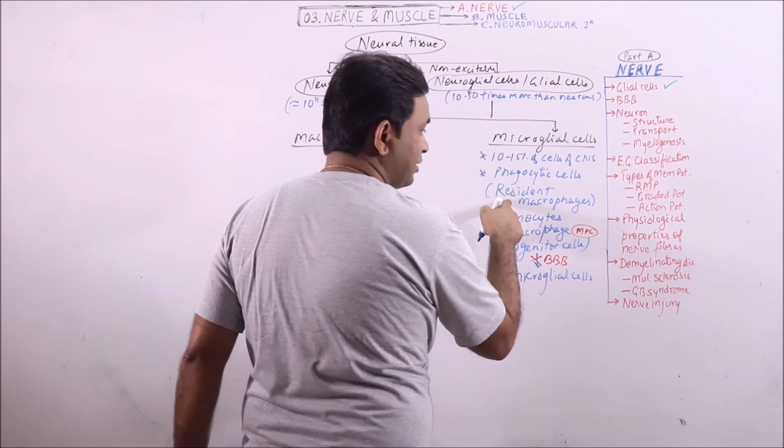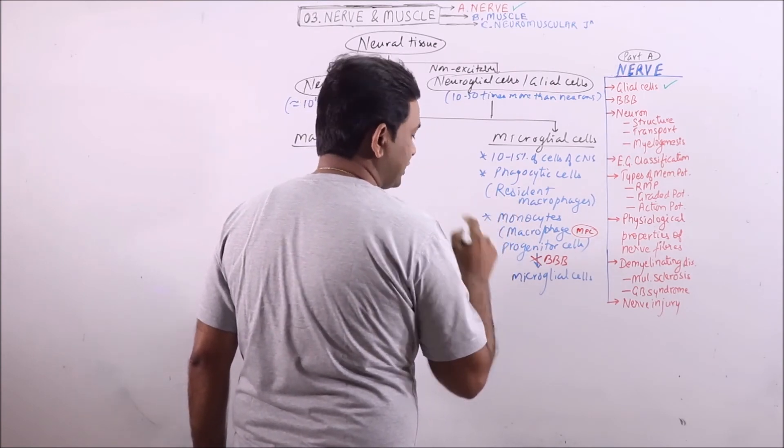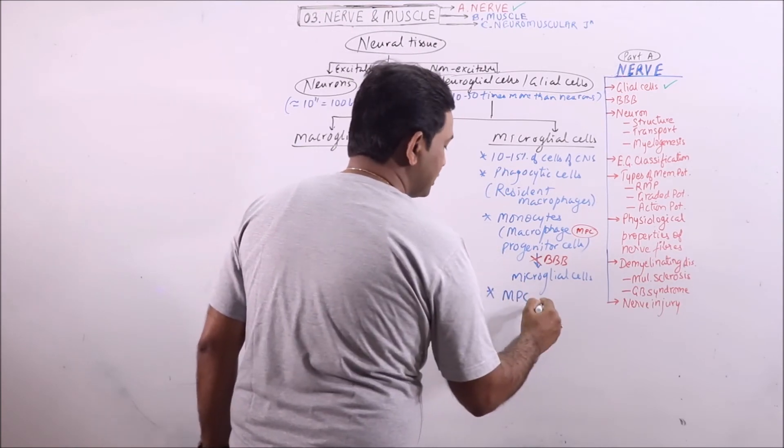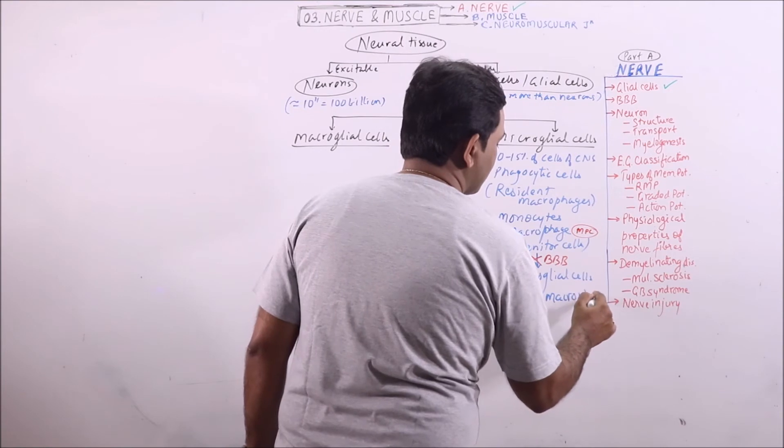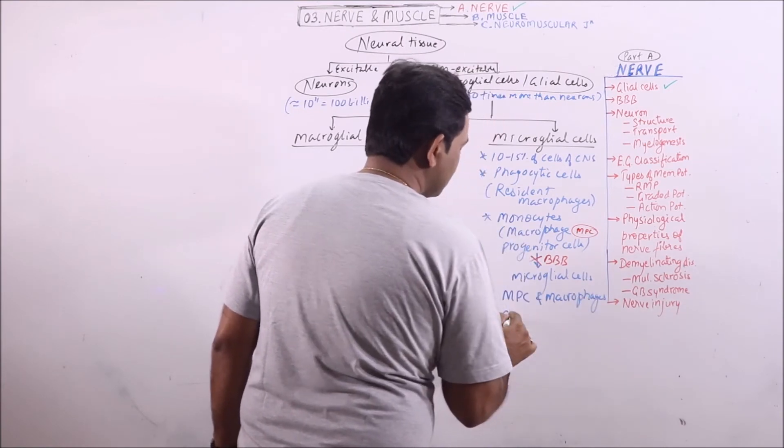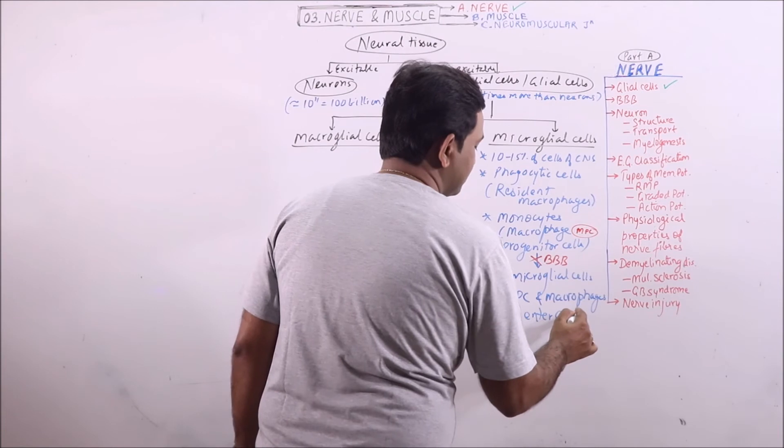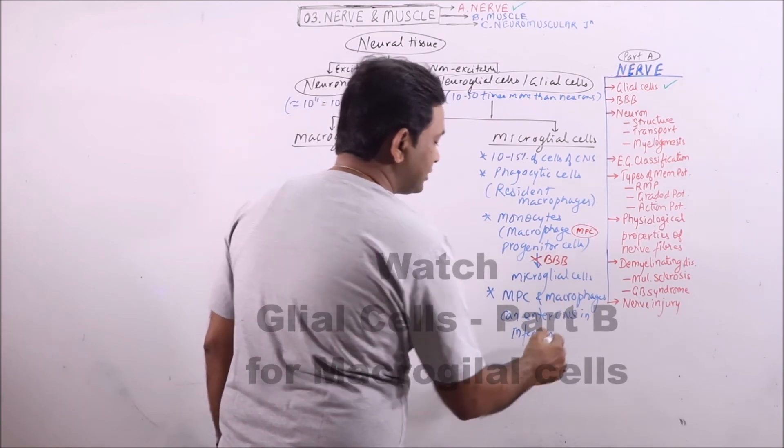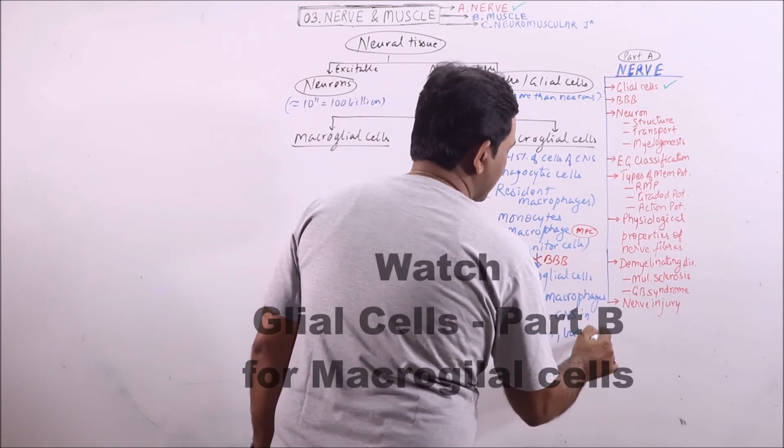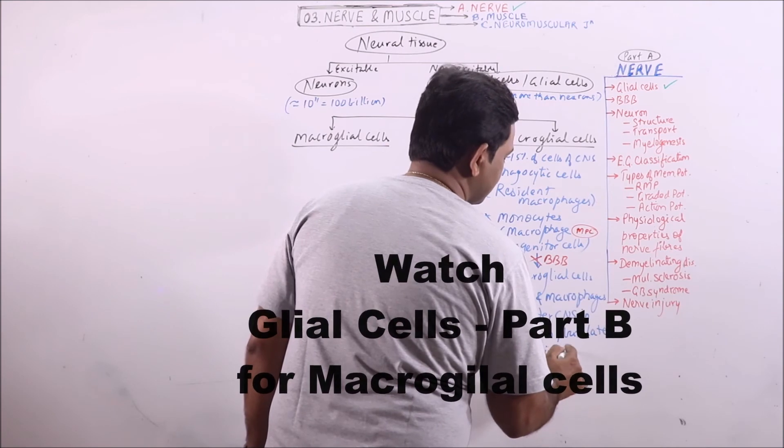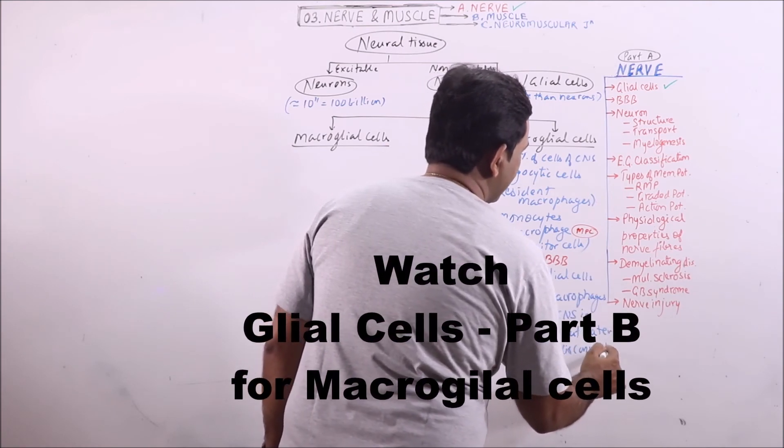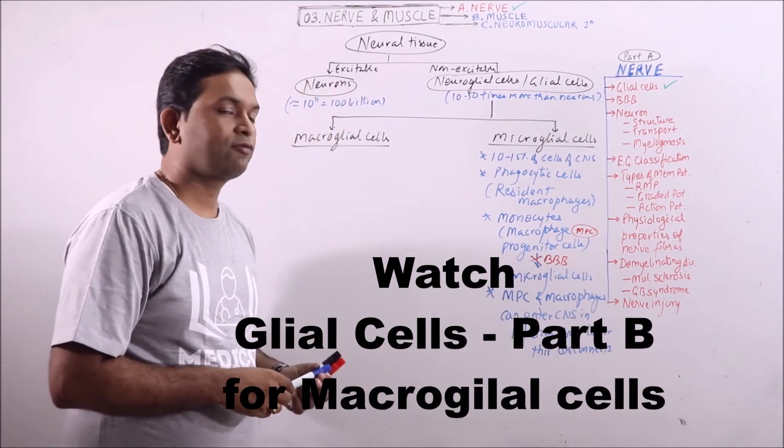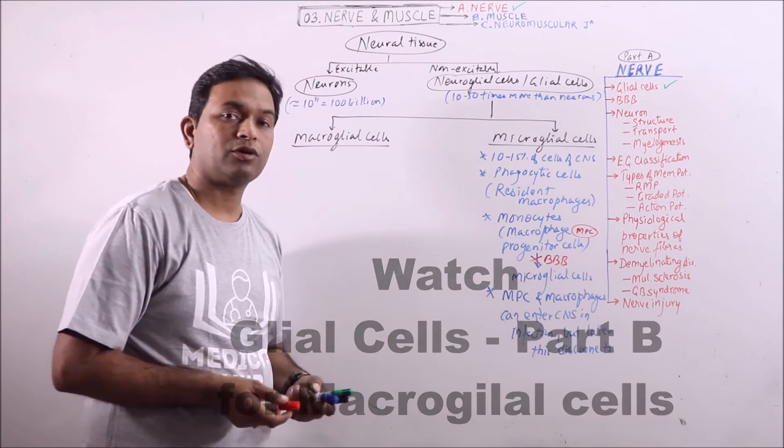So these are resident macrophages and not developed from monocytes. The MPCs, that is macrophage progenitor cells, and macrophages can enter CNS in infection. So during infection these can enter CNS but later this disconnects. Then blood brain barrier will not allow these cells to enter CNS.